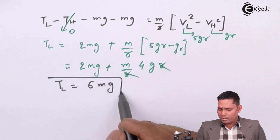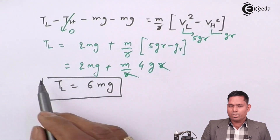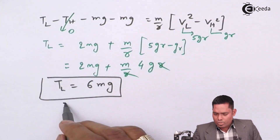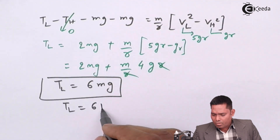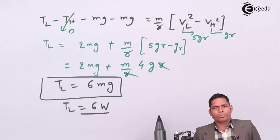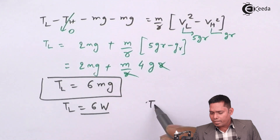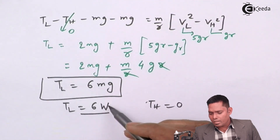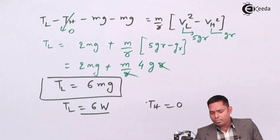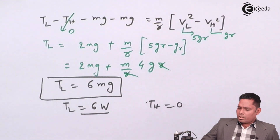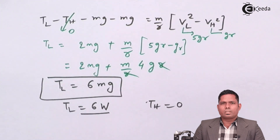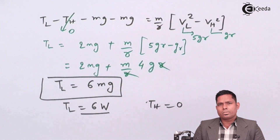So the difference of tension at the lowest and highest point is 6 times the weight, 6MG. The tension at the lowest point is 6MG, and at the highest point it is zero. Therefore the difference in tension is 6MG.